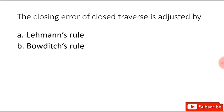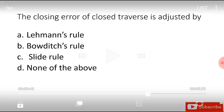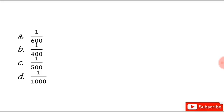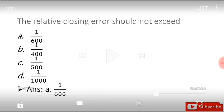The closure error of the closed traverse is adjusted by Bowditch rule, transit rule, or none of the above, and the answer is Bowditch rule. The relative closing error should not exceed 1 by 600, 1 by 400, 1 by 500, or 1 by 1000. The right answer is 1 by 600.